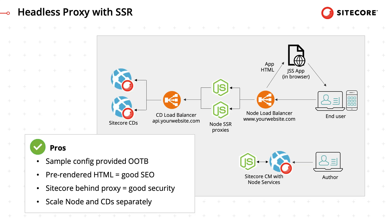In headless proxy with server-side rendering topology, the JavaScript front-end is physically decoupled from the Sitecore backend. Node servers act as a proxy between Sitecore content delivery servers and the end-user's browser. They make requests to the JSS APIs running on the CD servers and then render the JSS application to HTML before returning it to the client. Note that when we talk about headless proxy topology, the proxy aspect only applies to CD servers — CMs still use integrated mode.